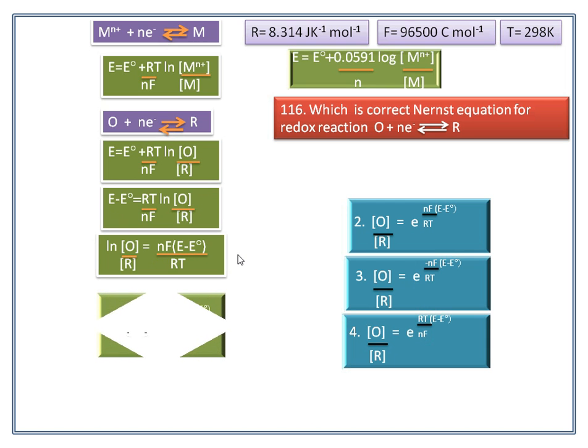Now we get concentration of O by concentration of R equals e to the power nF divided by RT into E minus E°. Third option it has minus sign.